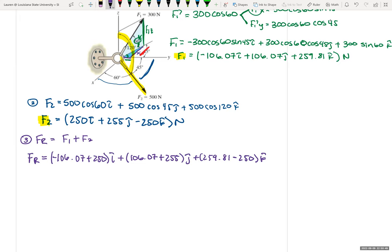And putting that into our calculator, we get 143.43 I plus 459.62 J plus 9.81 K.